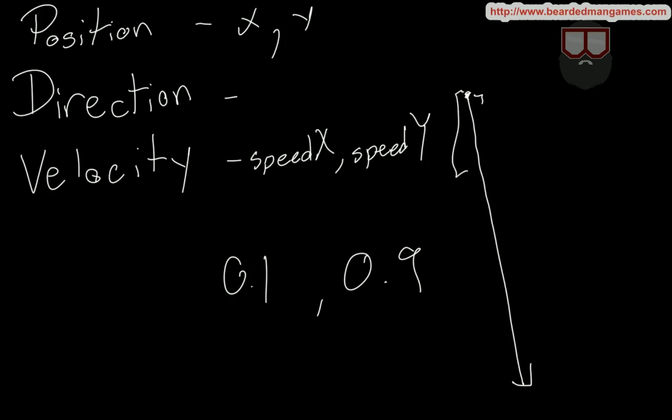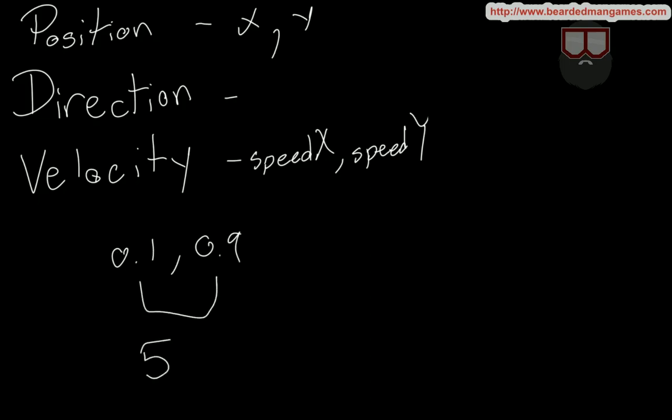So when we normalize, we get out a number between negative one and one that we can then apply a single float to. Let's say that we have our numbers, let's keep those numbers, 0.1 on the X and 0.9 on the Y. What we can do is multiply these by a float, let's say 5.